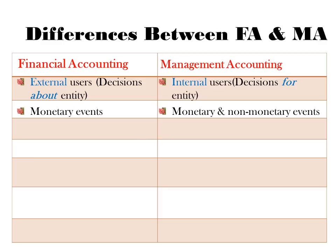Financial accounting, because of its very nature, involves preparing statements for outsiders. Therefore, these statements must be prepared in accordance with certain rules, referred to as generally accepted accounting principles — GAAP. As a result, the statements prepared for financial accounting purposes are said to be objective. Management accounting statements, on the other hand, are done in accordance with what management wants, and as a result, management accounting statements are therefore subjective.